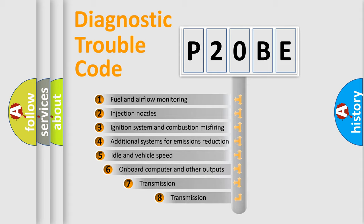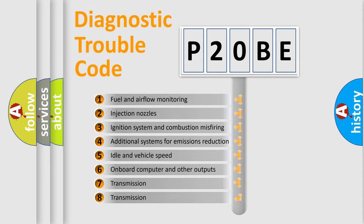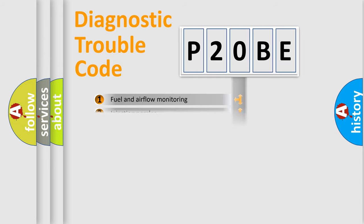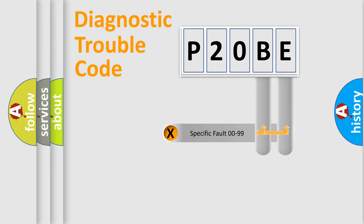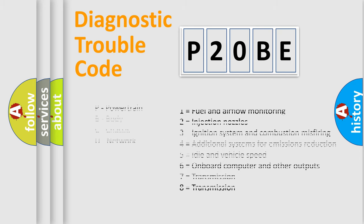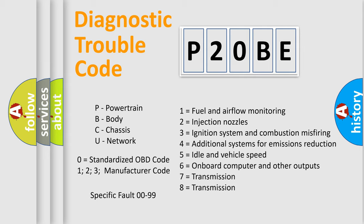The third character specifies a subset of errors. The distribution shown is valid only for the standardized DTC code. Only the last two characters define the specific fault of the group. Let's not forget that such a division is valid only if the other character code is expressed by the number zero.